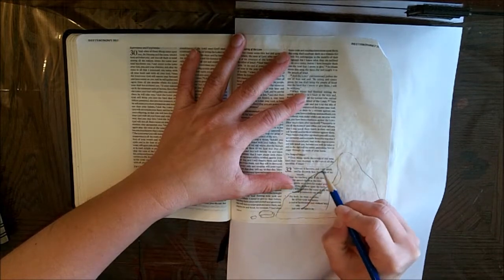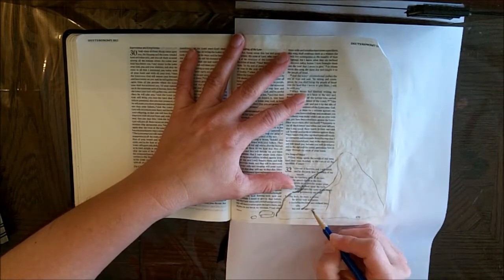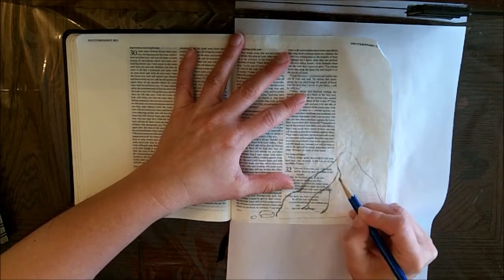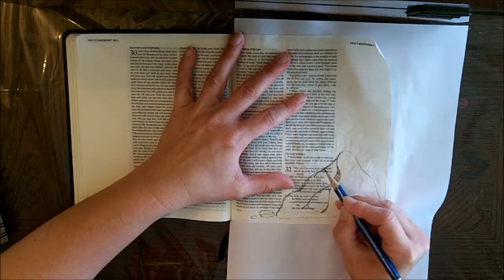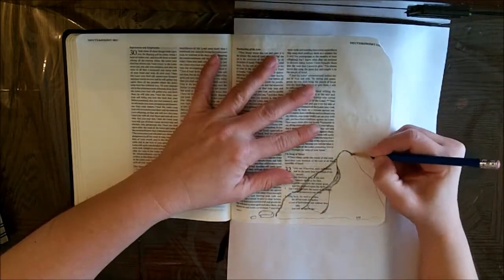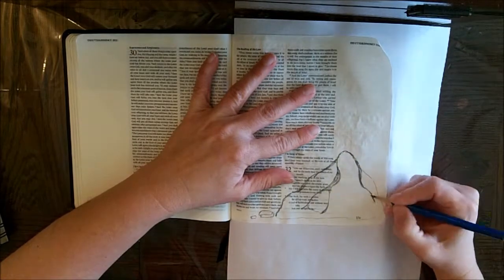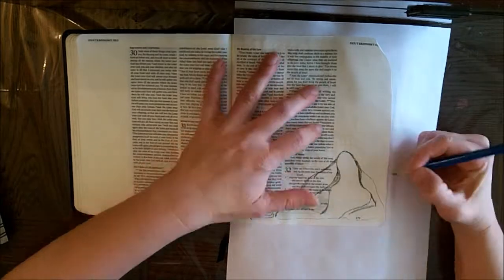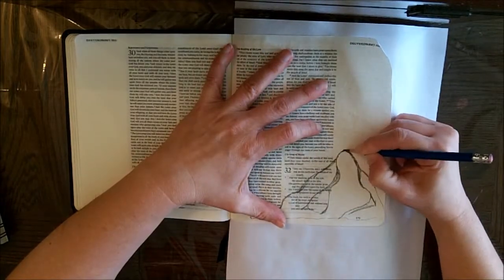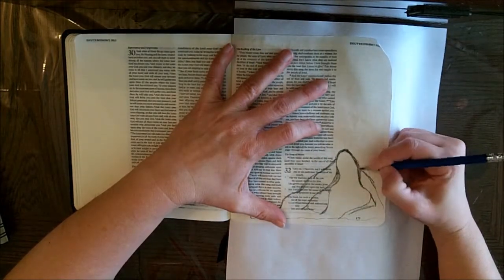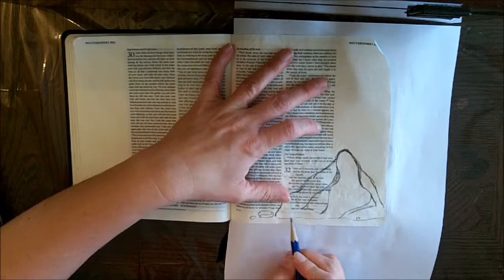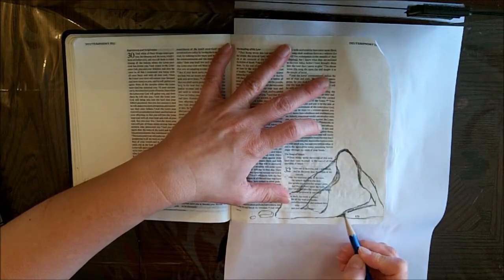But when I put on a third layer of gesso and dried in between with my heat gun, ta-da! It flattened out more. It doesn't have nearly as many wrinkles, and I like the texture better. So for me, the sweet spot of page prep with clear gesso is three thin coats, drying in between with a heat gun.